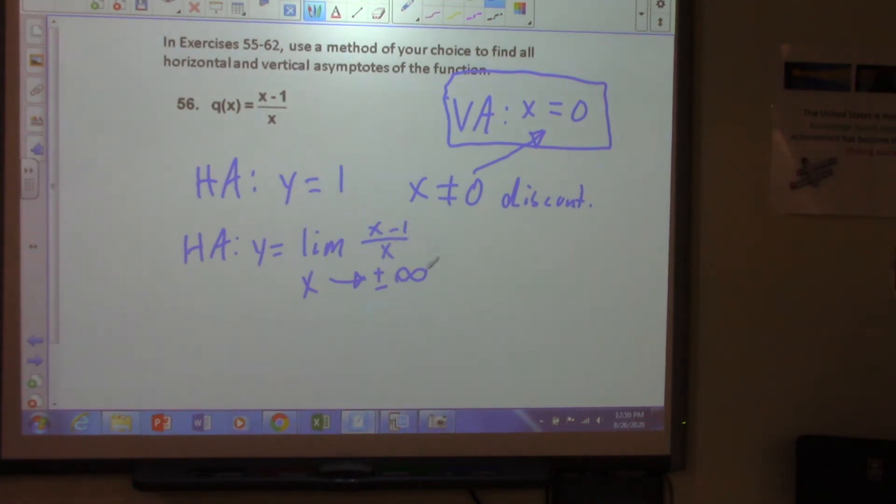Okay, what's going to happen to this function as, we'll just use positive infinity. What happens as x gets closer and closer to infinity? What happens when x gets real large here? What is this going to get close to? If we say let x equal 10,000, right, that's going to be very close to that.